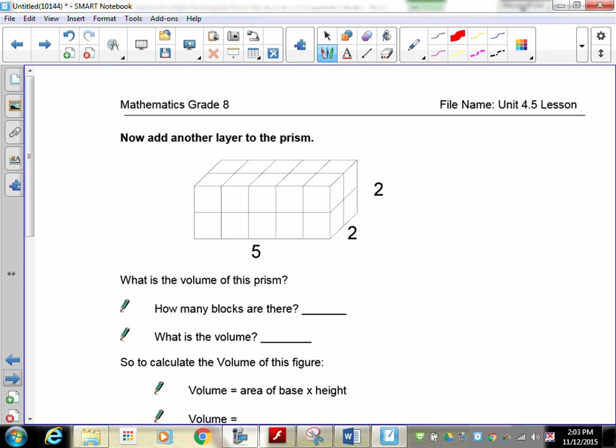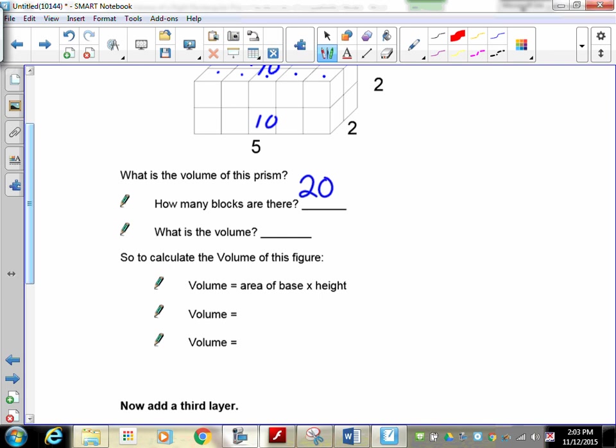The volume of this one, you have to count how many cubes. You know that you've got 1, 2, 3, 4, 5, 6, 7, 8, 9, 10 in each layer. So if there's 10 up here in this layer, there's also 10 in that layer. That means we now have a total of 20 blocks.